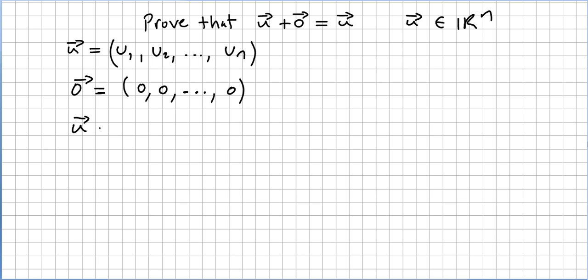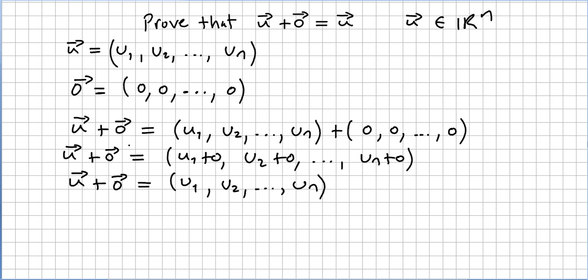So what is vector u plus vector 0? Vector u is this one and vector 0 is this one. What is addition? Addition is defined, please check the previous videos if you are not comfortable with this, addition of components.